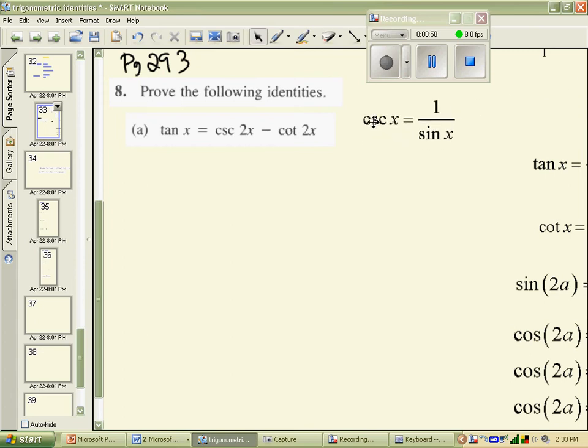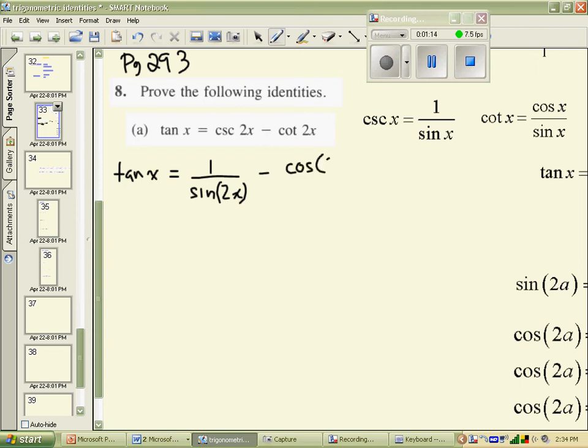Cosecant is 1 over sine, and cotangent is cos over sine. So I'm going to use those two relations, and I'm going to rewrite what I have here on the right-hand side. So left-hand side is still tan x, right-hand side is cosecant, which is 1 over sine of 2x, and cotangent of 2x is going to be cos 2x divided by sine 2x.